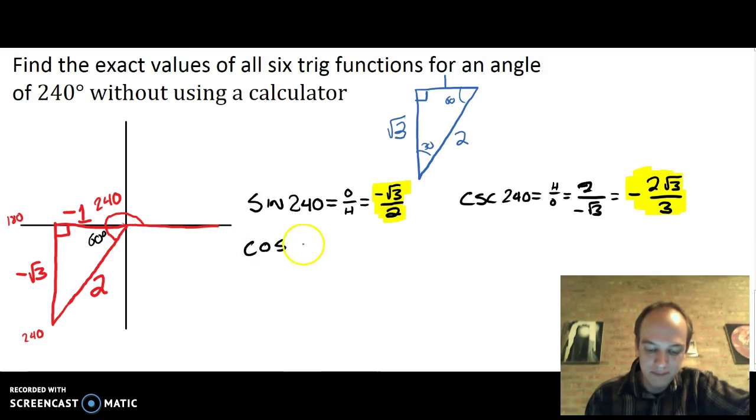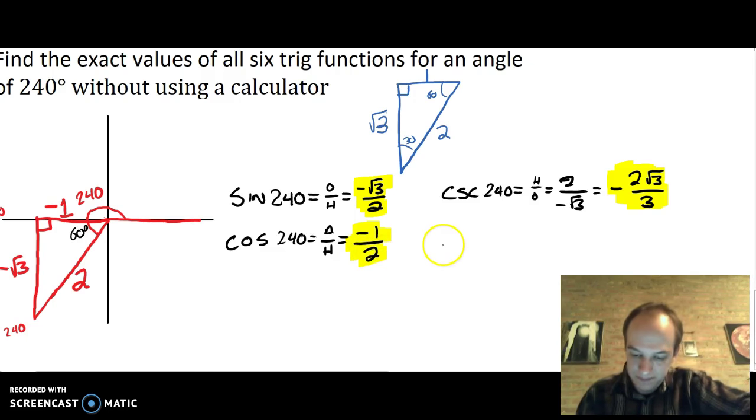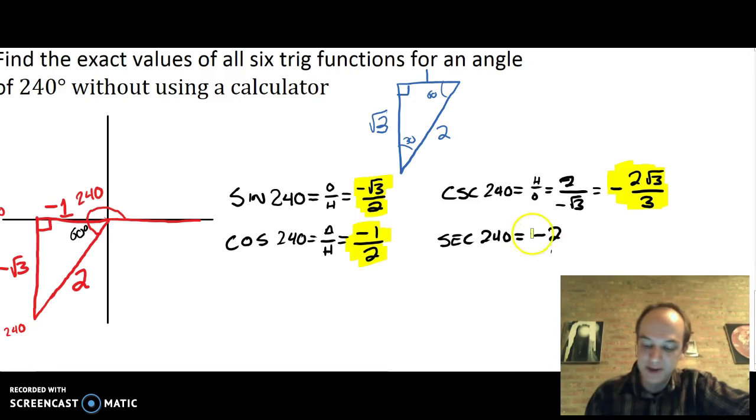Cosine. Cosine of 240° is adjacent over hypotenuse. The adjacent side is negative one, the hypotenuse is two. So the final answer there is negative one half. Secant of 240° is the reciprocal of negative one over two. So that's going to be negative two over one. I don't need to write the one. The final answer is just negative two.